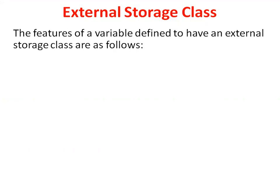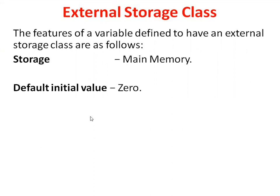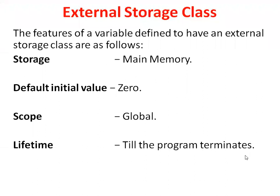Good evening friends. In this video we will discuss about external storage class. Features of a variable defined to have an external storage class are as follows: storage will be in main memory, default initial value is 0, then scope is global — that means this external storage class variable can be accessed in all the functions, that is called global scope. Global scope means we can access in any function. Then lifetime is till the program terminates, till the end of the program.